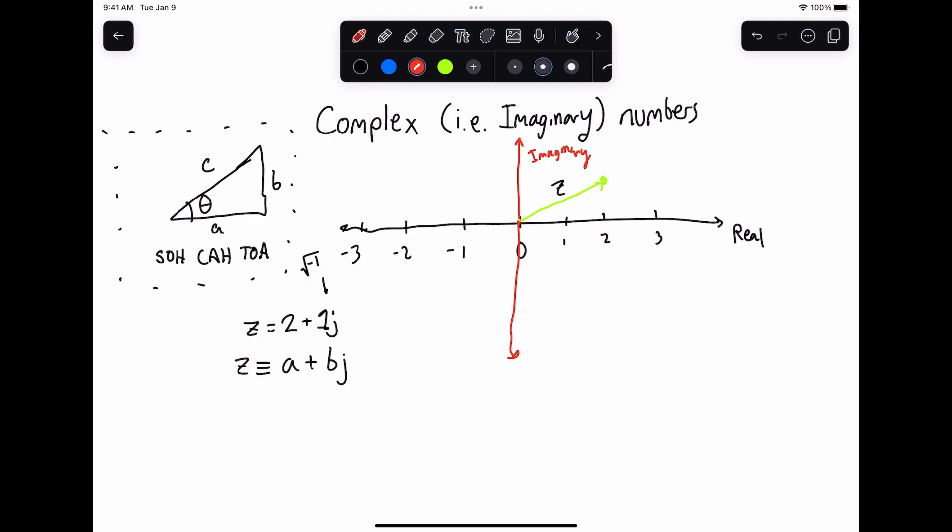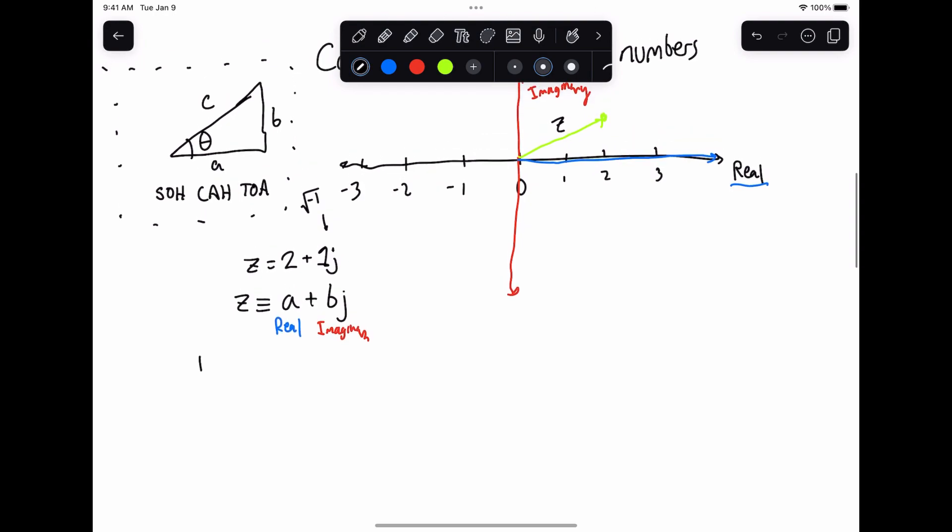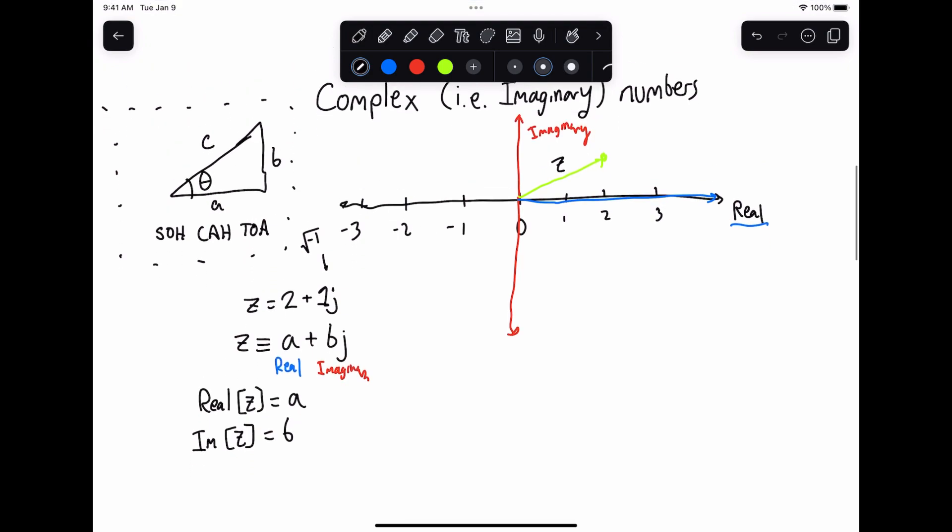a plus bj, where a corresponds to the real part here, so this is real, this is the real direction, and this b term corresponds to the imaginary part. And as a result, we can create operators on z, so we can say the real part of z of any complex number z is just equal to a, and the imaginary part of z is equal to b. Pretty cool,